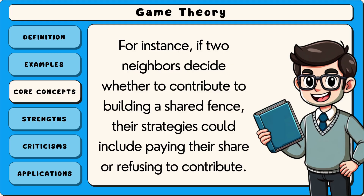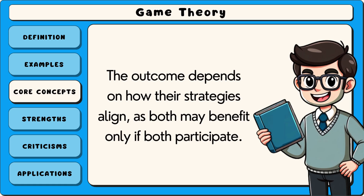For instance, if two neighbours decide whether to contribute to building a shared fence, their strategies could include paying their share or refusing to contribute. The outcome depends on how their strategies align, as both may benefit only if both participate.